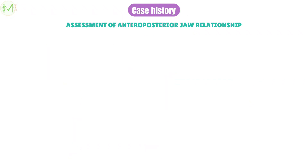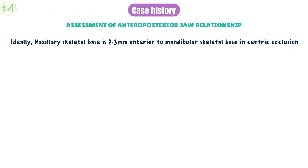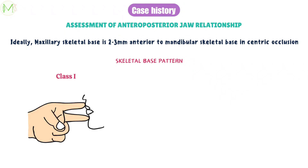Now let's assess the anterior-posterior jaw relationship. Ideally, the maxillary skeletal base is 2 to 3 mm anterior to the mandibular skeletal base in centric occlusion. We place the index finger at approximately point A of the maxilla — the deepest point in the curvature of the upper lip — and the middle finger at approximate point B — the deepest point in the curvature of the lower lip on the mandible. This can be done on the skin or after lip retraction, and is analogous to holding the hand like a gun. When the fingers are placed at their respective points, the palm will be straight or horizontal in normal Class I skeletal bases.